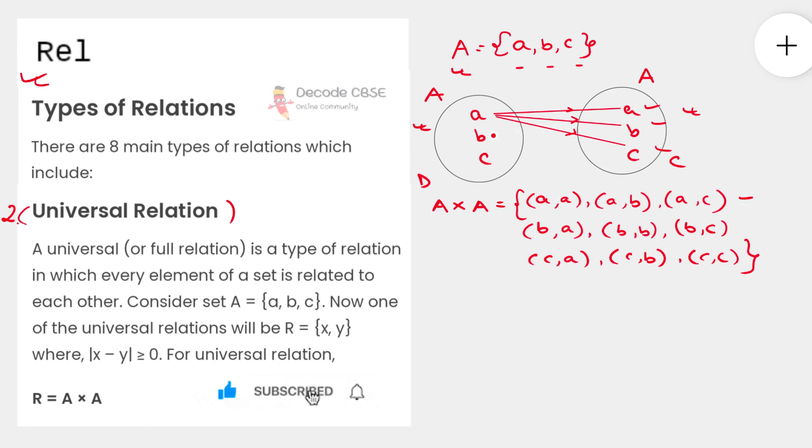Similarly, b will also be pairing up with a, b, and c. I have not drawn the mapping here to avoid confusion, but you get the idea. In this process we get the Cartesian product of the set with itself. How many ordered pairs will we get? We have three elements in set A and three elements in set A, so eventually we'll end up getting nine ordered pairs.